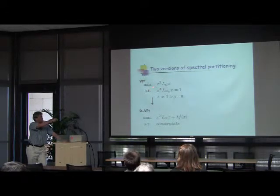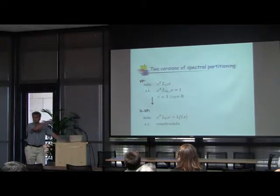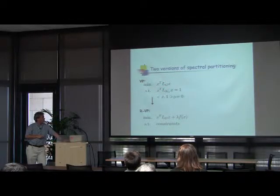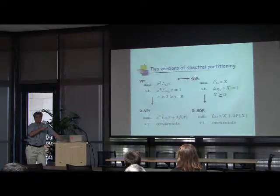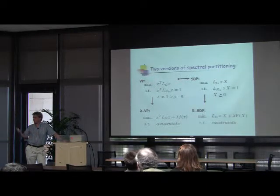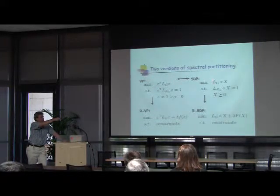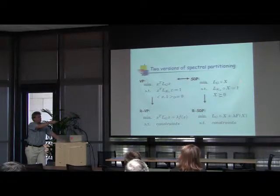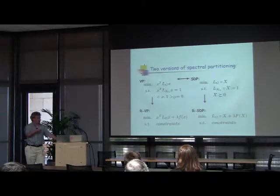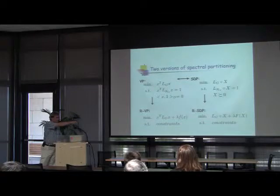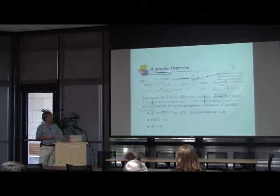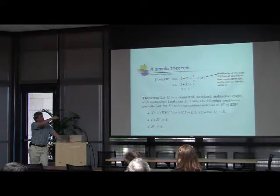This is an optimization problem whose solution is the eigenvector you want. I can write down the optimization problem, take my objective, and put regularization in the usual way. Alternatively, where x is a vector, I could write this as a semi-definite program where x is an SPSD matrix. I've seemingly made the problem harder, but it turns out you can take the solution to be rank one — capital X equals lowercase x times x-transpose — so the two are equivalent. I can put the regularization here as: minimize L dot x plus lambda times f(x), which I'll call an f_a-SDP.